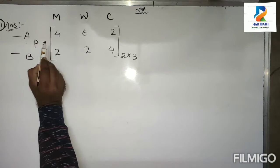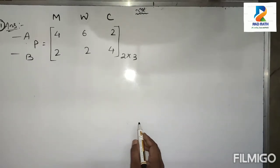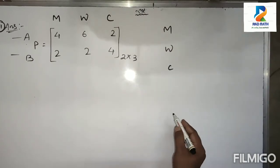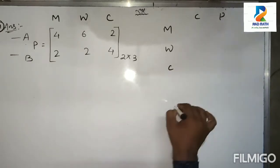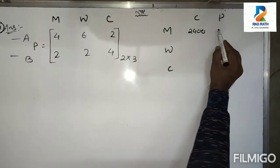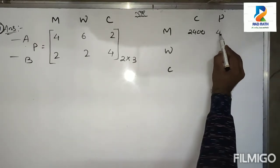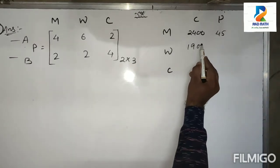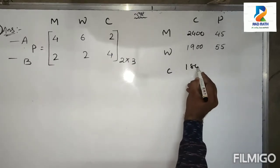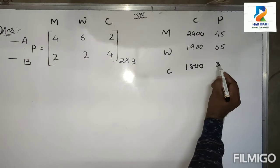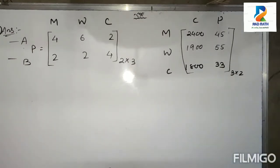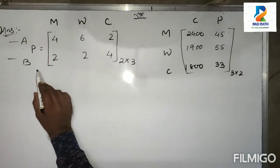Let it be P. Now the second matrix: if you take men, women, and children in row-wise and calorie and protein in column-wise, then the data will be 2400 calories for men and 45 protein for men; 1900 calories for women and 55 protein for women; 1800 calories for children and 33 protein for children. It will be a 3×2 matrix.